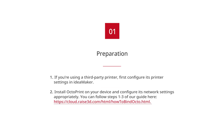First, if you're using a third-party printer, first configure its printer settings in IdeaMaker. Second, install OctoPrint on your device and configure its network settings appropriately. You can follow steps one through three of our guide here.